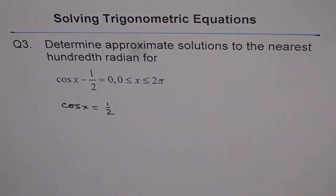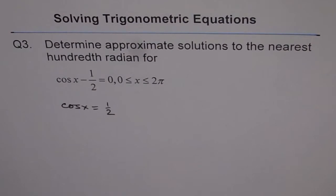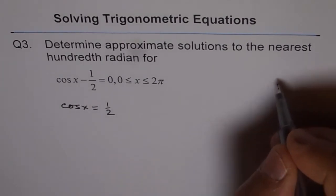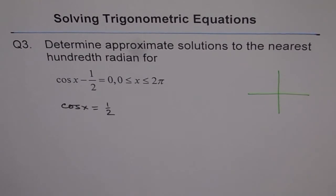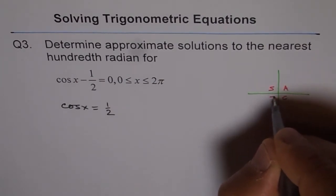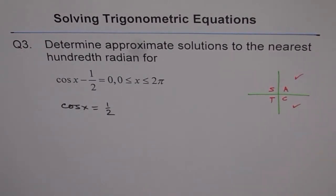We have cos x equals half and we need to find the angle x for which cos x is half. How many solutions do we expect? Looking at the CAST rule, cos is positive in two places: quadrant 1 and quadrant 4. So we are expecting two solutions.